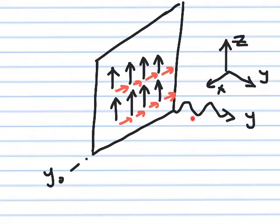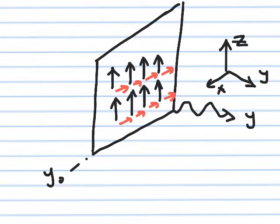The field is constant on any constant-y plane. I'm jumping ahead slightly to also show the electric field, which is going to be in the minus x-direction and is also constant on the plane. If you take the cross product between E and H — rotating from the red to the black — you get the direction of wave propagation. This is one key property of electromagnetic waves.